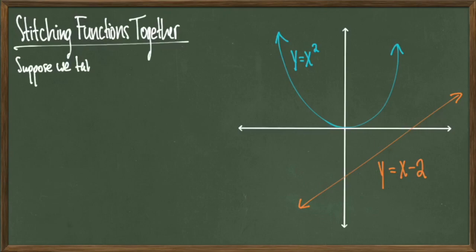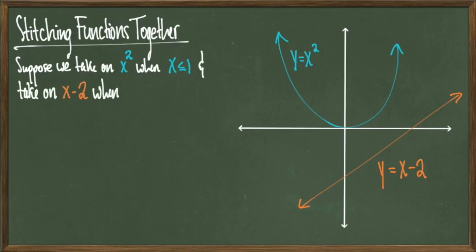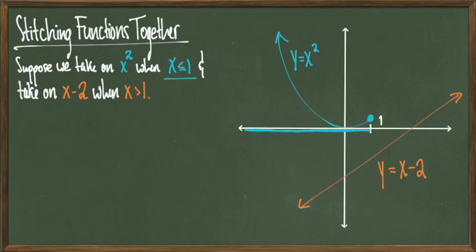To be more concrete, suppose that I only want to consider the function y equals x squared when x is less than or equal to one, and then I only want to consider x minus two when x is strictly greater than one. So in this situation, positive one is sort of like my benchmark. I'm going to cut the number line into two halves — on one half I'm going to consider y equals x squared, and on the other half I'm going to consider y equals x minus two. So only when x is less than or equal to one I consider y equals x squared, so I'm going to erase that half of the graph that I don't need. And when considering y equals x minus two, I only consider it when x is strictly greater than one, so I erase the non-needed half of that graph as well.